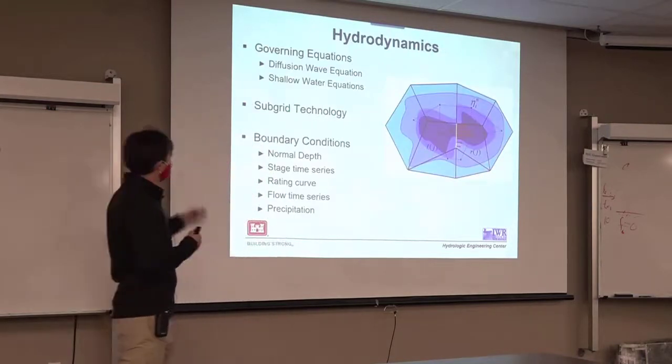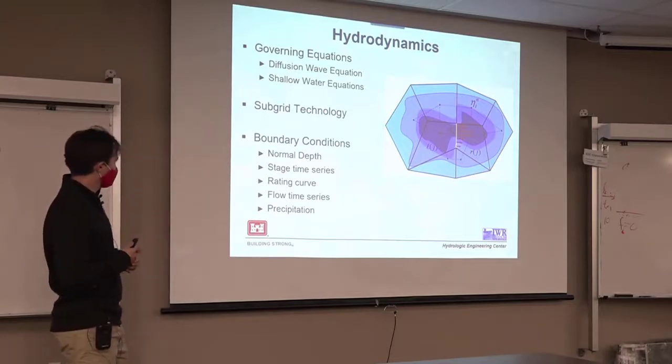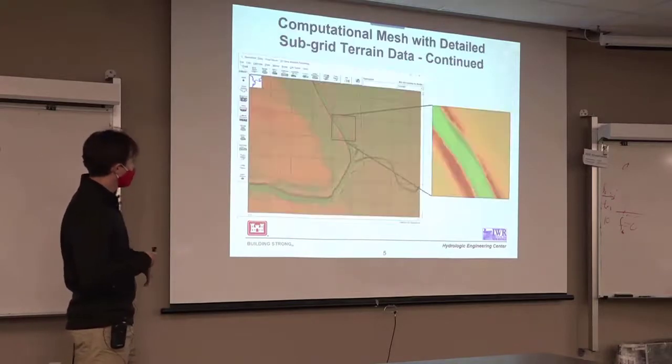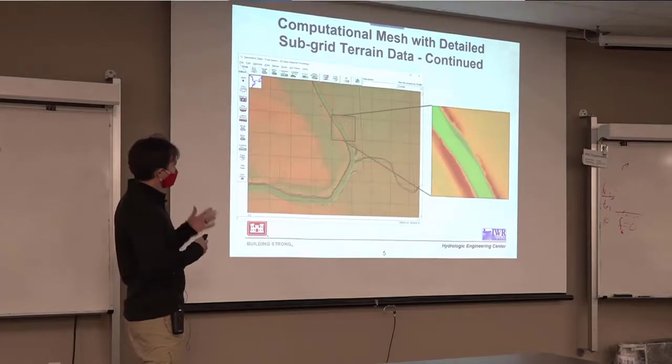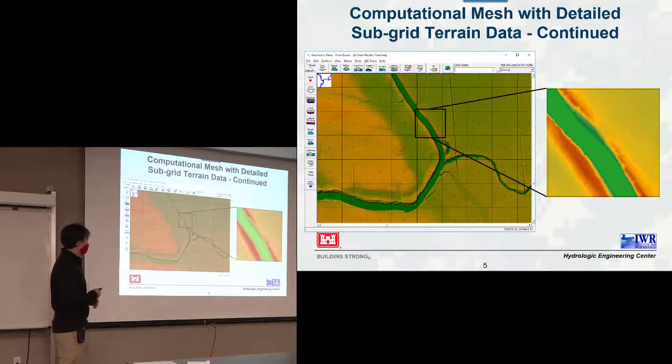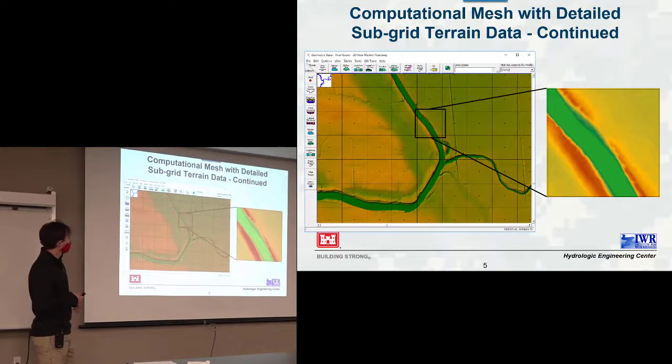In hydrodynamics, we already covered this. We have two options, diffusion wave shallow water equations. We use subgrid. These are the boundary condition types. And this is just a quick example that you've probably already seen of how subgrid works in hydraulics and why it's beneficial.